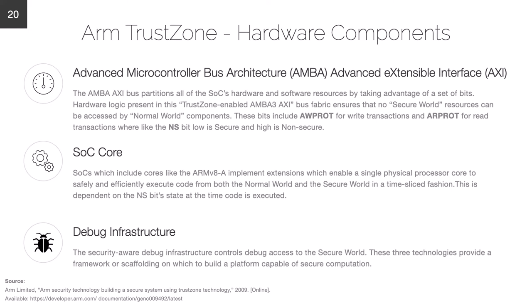Let's look at the three hardware components involved in any TrustZone implementation. First, the bus — the Advanced Microcontroller Bus Architecture Advanced Extensible Interface, or AMBA-AXI bus — contains two bits, one for write protection and one for read protection, similarly set to zero for secure and one for non-secure. There are several bits of logic inside the SOC core that read the NS bit and make decisions based on its state. The debug infrastructure also plays a role, and you can follow the source on this slide to read more about how all these components contribute to an ARM TrustZone system.